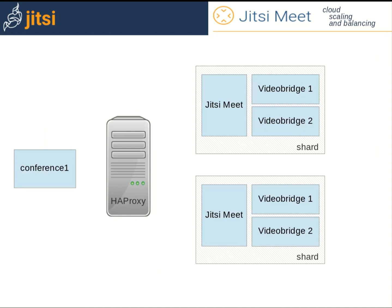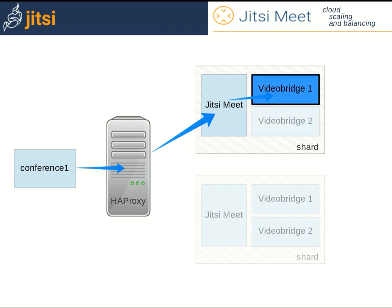With all the scaling and load balancing options, you have a very flexible system. But once a conference is started, you have a critical single point of failure, and that is the video bridge where this conference is running. Currently the conferences can't be moved to another bridge, so a failure in the bridge leads to a failure in the conference. A system or network problem of the bridge can lead to bad experience or failure in the conference. That's why it's important to keep an eye on the video bridges. Even though you can have scaling and balancing, this won't replace good old system monitoring, health checks, and alarms.